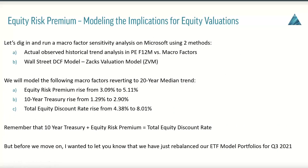We're going to run a macro factor sensitivity analysis on Microsoft using two methods. First, the actual observed historical trend analysis in PEF-12M versus macro factors — super simple and I think you'll be blown away how easy this is in the Zacks Research System. Second, we'll use a Wall Street DCF model — the Zacks equity valuation model, which I've been involved with since its inception about 30 years ago. We'll model the following factors reverting to their 20-year median: equity risk premium rising from 3.09% to 5.11%, and 10-year treasuries rising from 1.29% to 2.9%, giving a total equity discount rate rise from 4.38% to 8.01%.